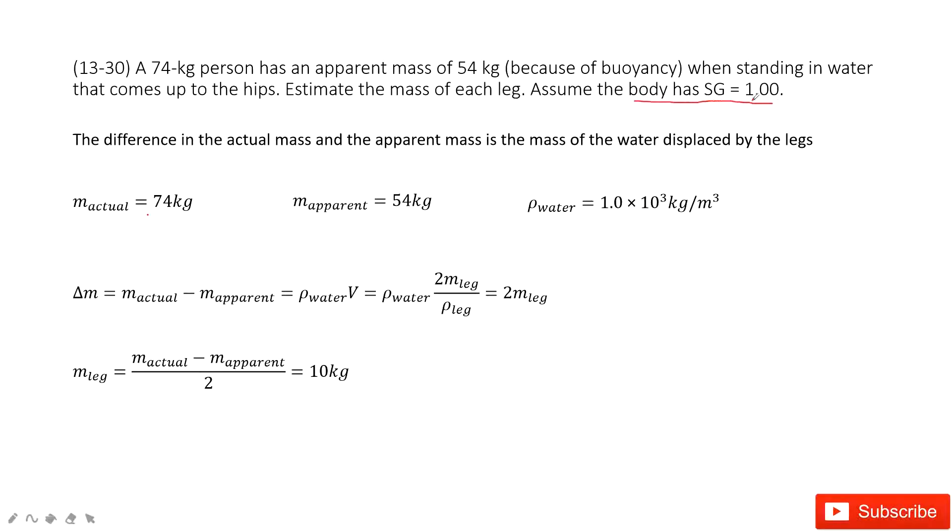It tells us the specific gravity is 1.00. That means the density for the body equals the density of water. Now we can see, in this one, we know the difference of the mass.